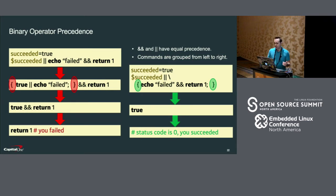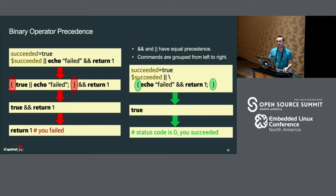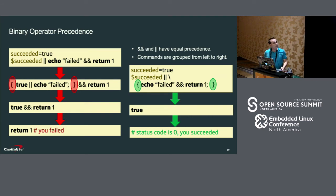With binary operators, bash treats them as having equal precedence and groups them from left to right. In this example, the user wanted bash to print 'failed' and return one, but only if the program actually failed. Unfortunately, bash effectively groups the first two statements as one — it says 'true or something else', so that's true, and then it says 'true and return one', so it's going to return one, meaning the command failed. On the right, we fix it by putting curly brackets around the left two statements so it only checks if things succeeded.